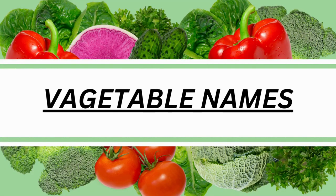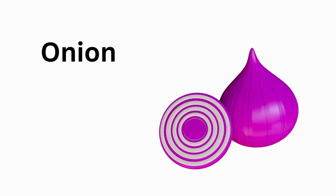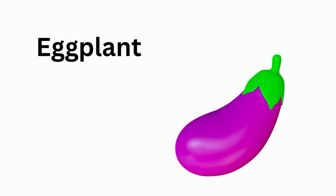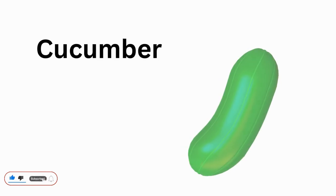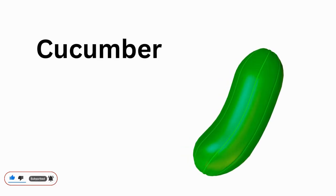Vegetable Names. Onion. Red chili. Potato. Eggplant. Ogden. Chocamber.